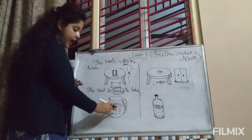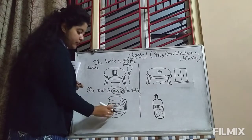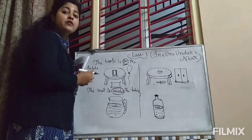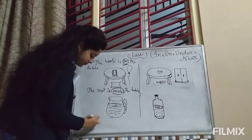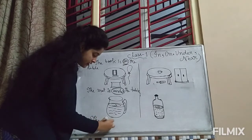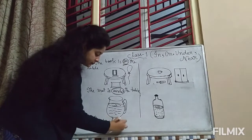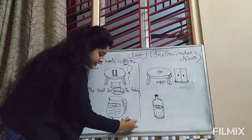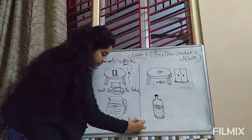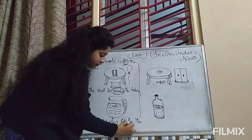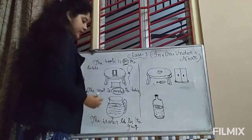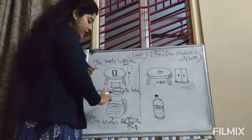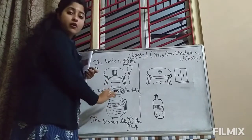Now if I say, where is the water? This is the jug and here is the water. If I ask you where is the water, you have to say: the water is in the jug. So here the word 'in' is showing the position of the water.